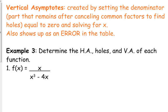So here's where vertical asymptotes come from. They come from when you divide by zero. We set the denominator after we've canceled common factors to find out holes, we set the denominator equal to zero and we solve for x.